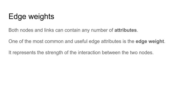As we are building our network, both the nodes and the edges can have any amount of attributes, and these attributes can be used in any of the algorithms we discuss. However, one of the most useful ones is edge weights. Edge weights represent the strength of the interaction between each and every node, and this will be used by many of the algorithms we will discuss.